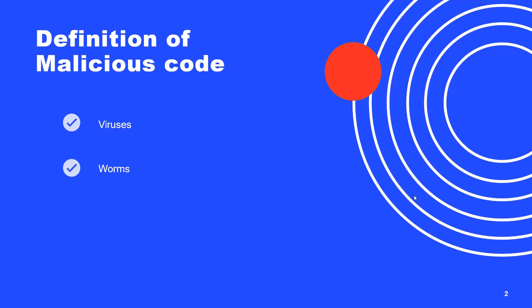A worm is a standalone malware computer program that can replicate itself in order to spread to other computers or hosts in the network.